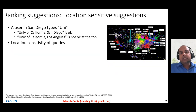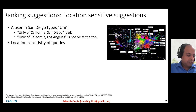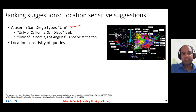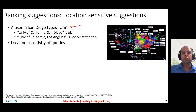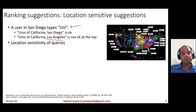While ranking suggestions, one also needs to be location sensitive. A simple example: if the user has typed 'UNI' as a prefix and the user is in San Diego, you would want to show 'University of California, San Diego' at the top — not 'University of California, LA' — because the user is located in San Diego.